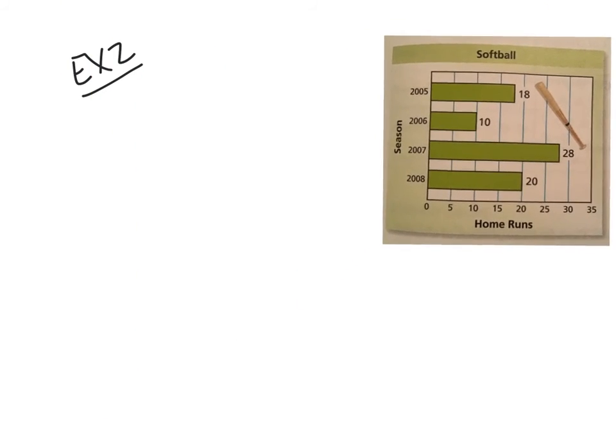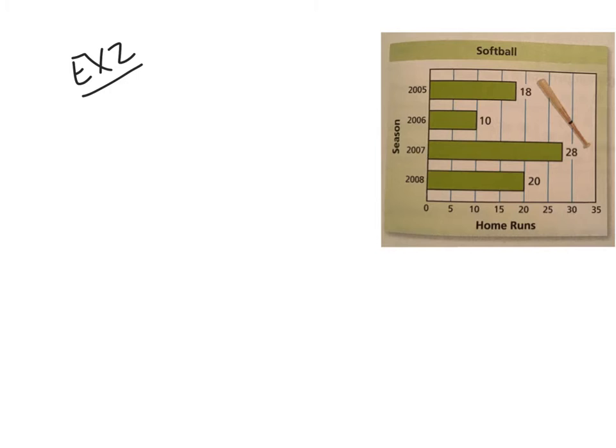All right we have a chart here about softball and home runs per season. The bar graph shows a softball player's home run totals. What was the percent of change from 2007 to 2008? We just need to focus on 2007 and 2008. How many were there in 2007? 28. And there was 20 in 2008.